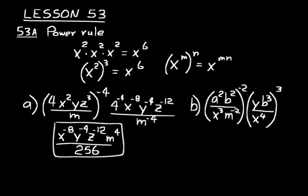Let's do another one. We have two factors here basically, and we want to use our power rule first to get rid of the exponent on the outside of the parentheses. Everything is multiplication — there are no plus or minus signs between parentheses. So we have a squared to the minus 2 power, which is a to the negative 4. Then b to the negative 4 over x to the negative 6, m to the positive 4 because minus 2 times minus 2 is positive 4. Then we also have y cubed and b to the 9 over x to the 12.